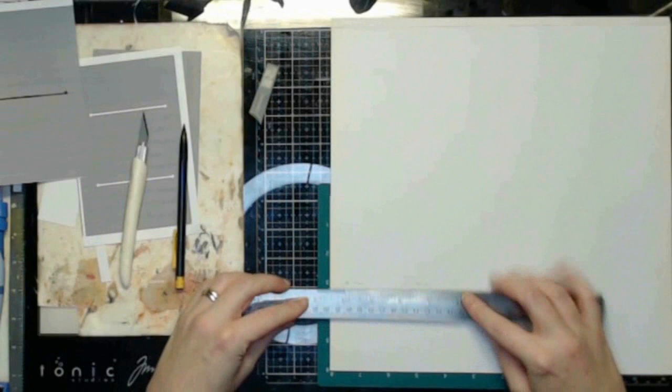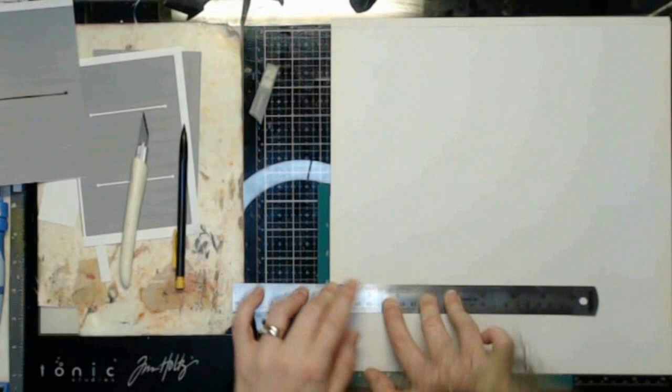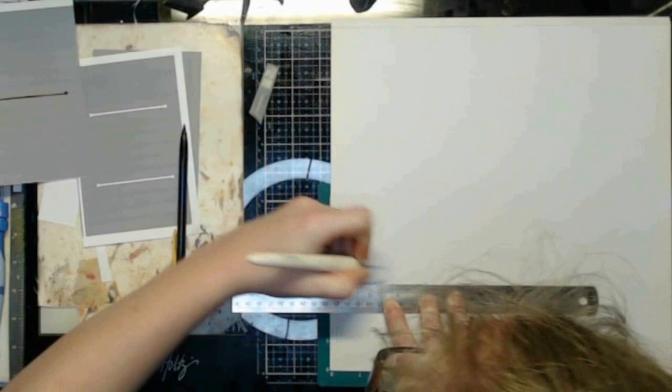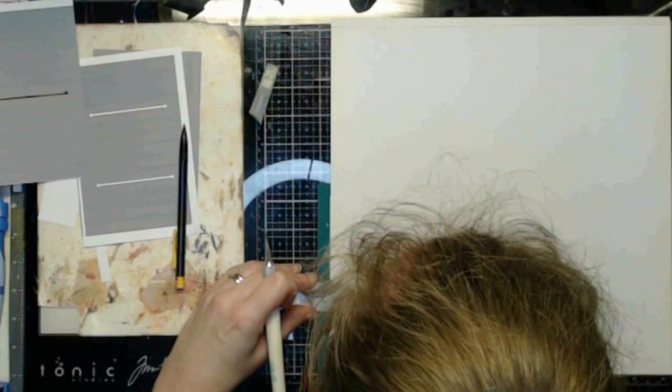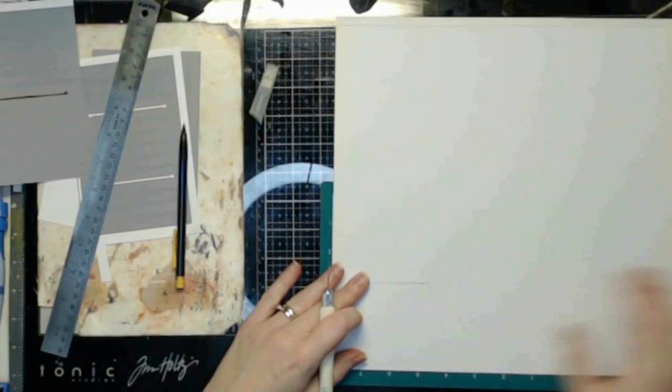And I do use a metal ruler just because I have had my craft knife catch and dig into rulers that have a plastic edge. So if you have a plastic ruler, just be mindful of that.